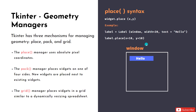The x and y are coordinates of a 2D plane — like an x-axis and y-axis. If you give x a value of 10, the label will be placed 10 pixels away from the left border of the interface. If you give y a value of 10, it will be 10 pixels away from the top of the interface.